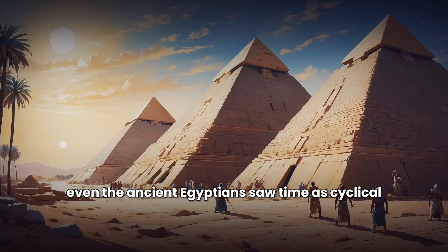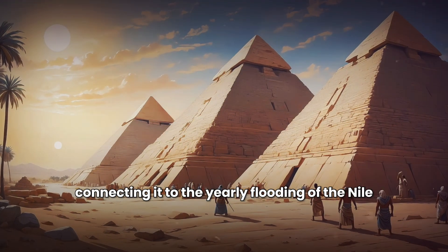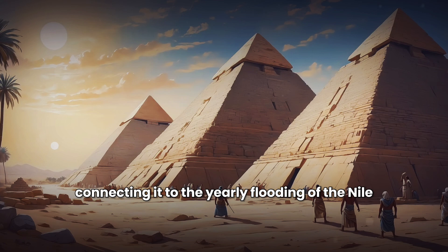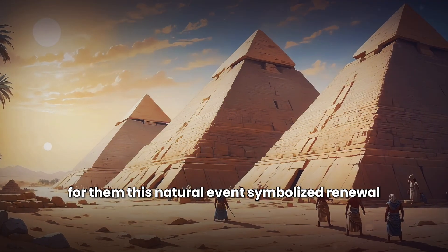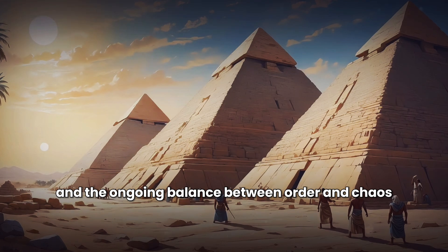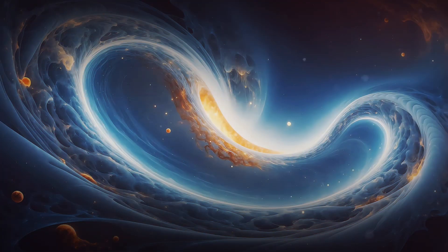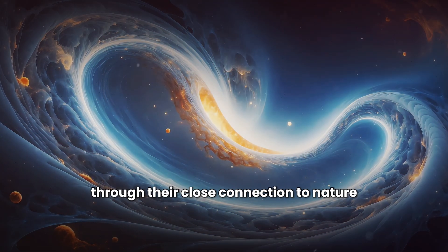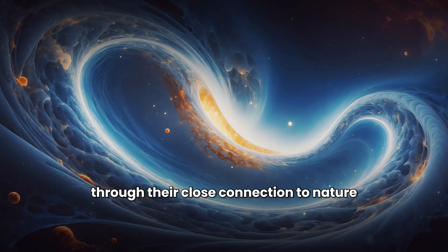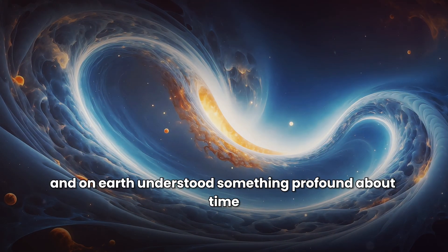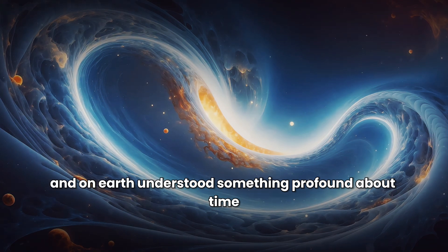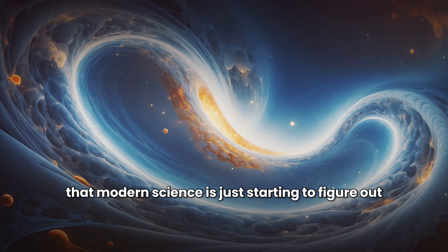Even the ancient Egyptians saw time as cyclical, connecting it to the yearly flooding of the Nile. For them, this natural event symbolized renewal and the ongoing balance between order and chaos. These ancient cultures, through their close connection to nature and careful observation of cycles in the sky and on Earth, understood something profound about time that modern science is just starting to figure out.